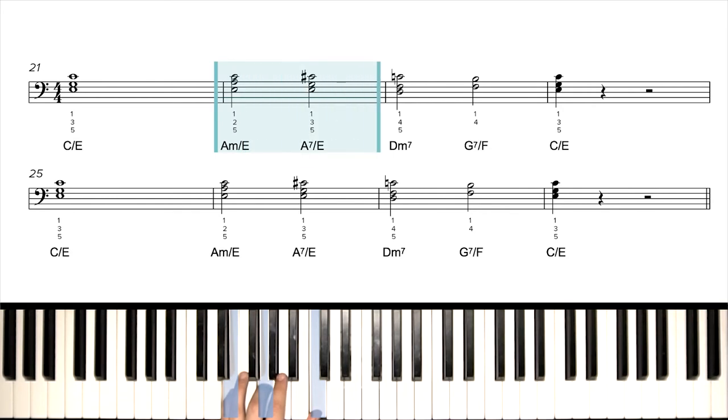Next measure, we change the middle note up to an A. That gives us A minor over E. Next chord, A7 over E. We're dropping the middle note back to G. We're sliding our hand back up to the back of the keys so our thumb can play C sharp. All right, those are each two counts.